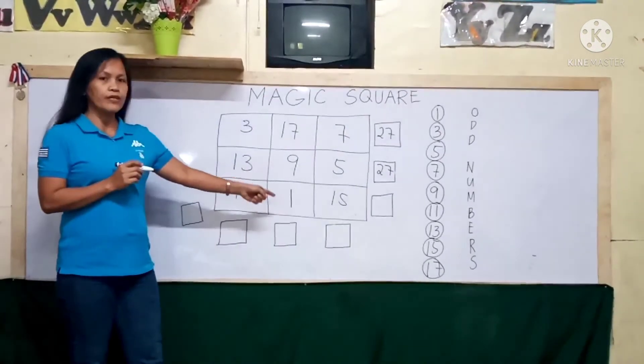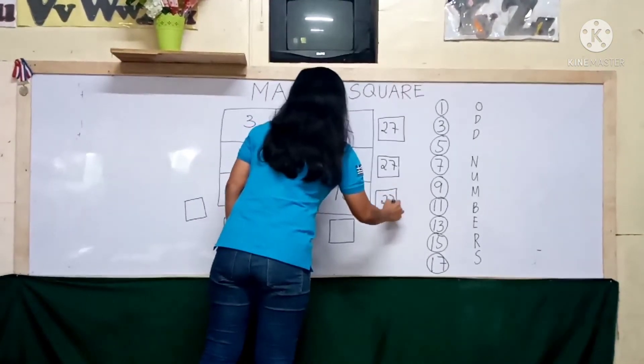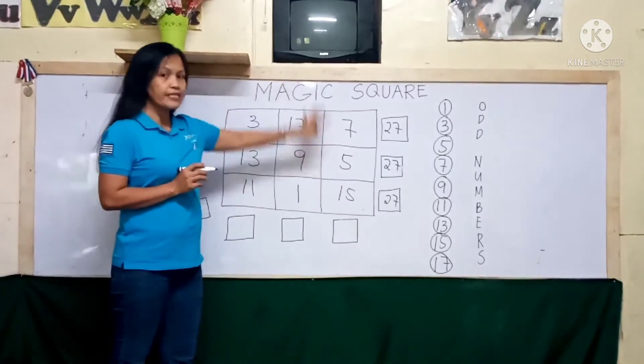11 plus 1, 12, plus 15, 27. Those are horizontal. How about the vertical?